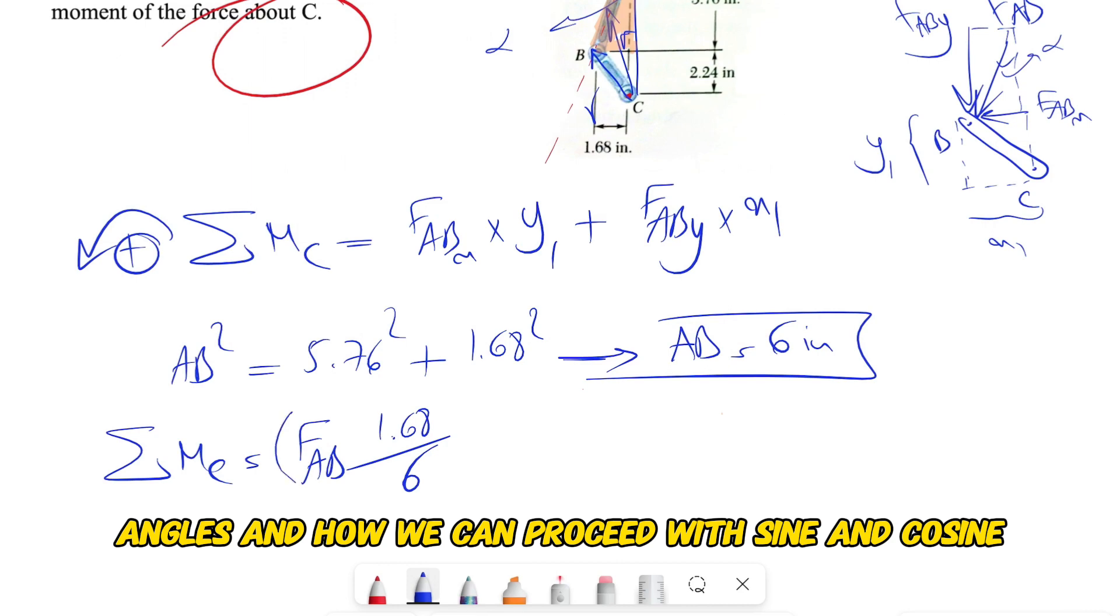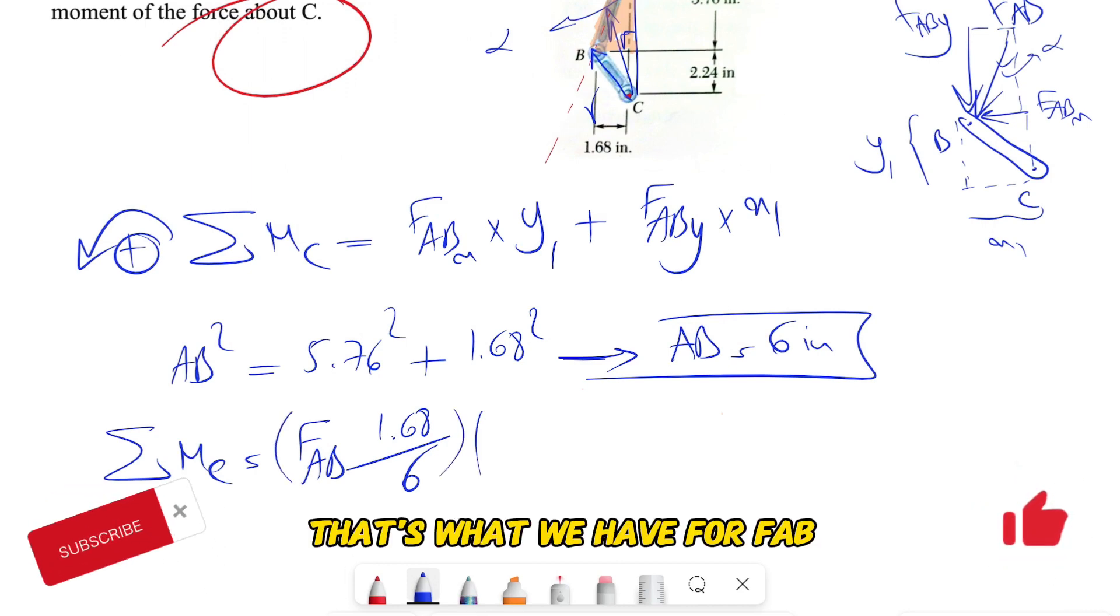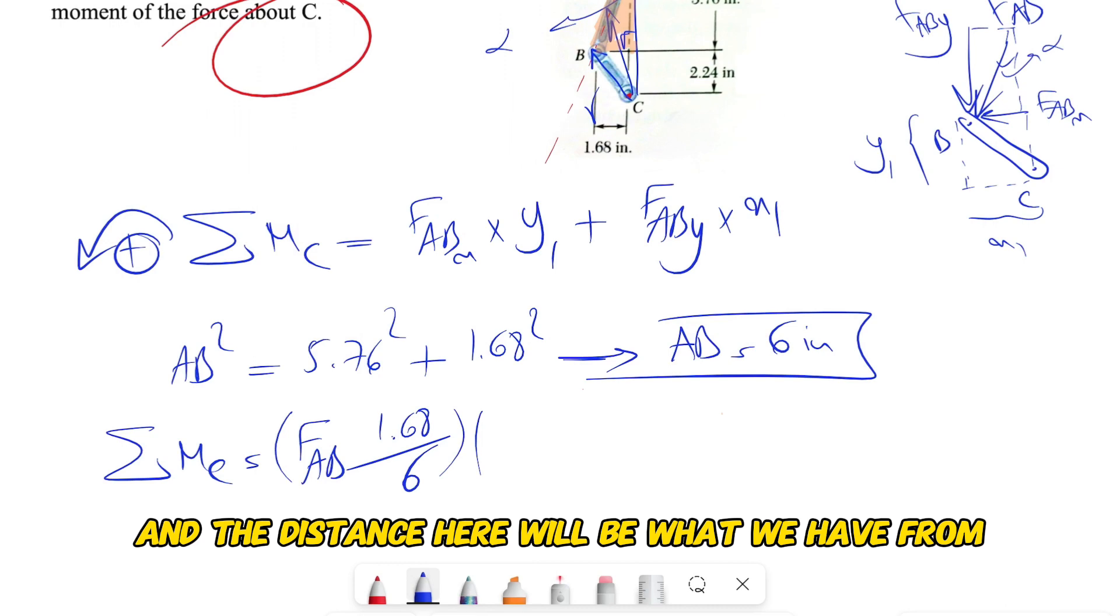That's what we have for FAB, and the distance here will be what we have from B to C, which we discussed is y1, and y1 will be what we have in here: 2.24 inches.